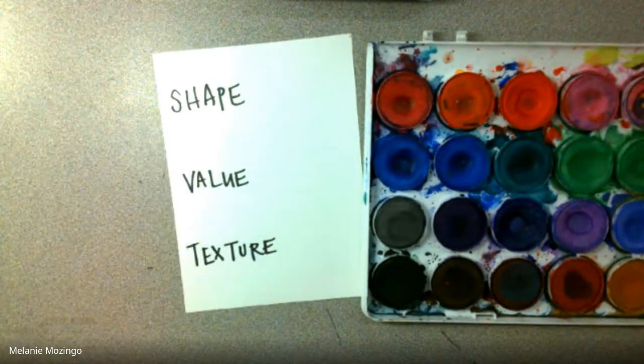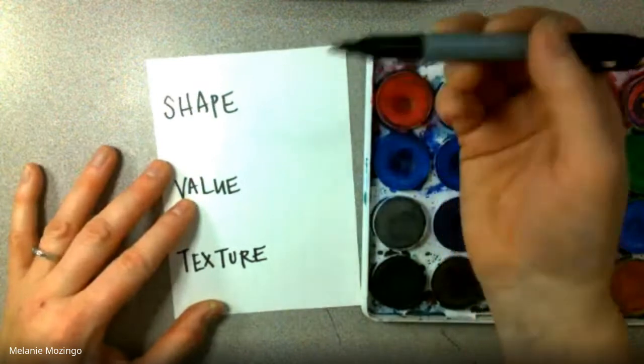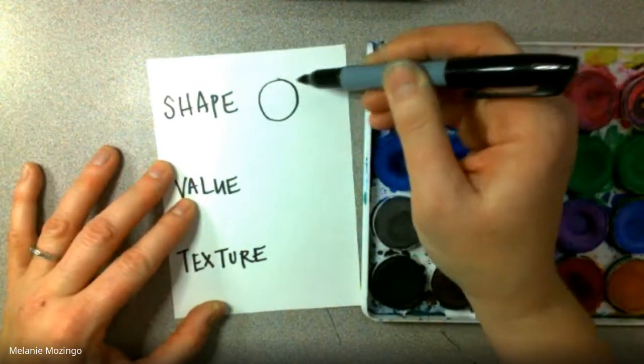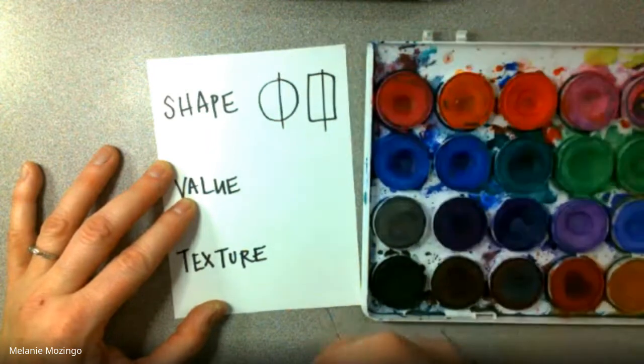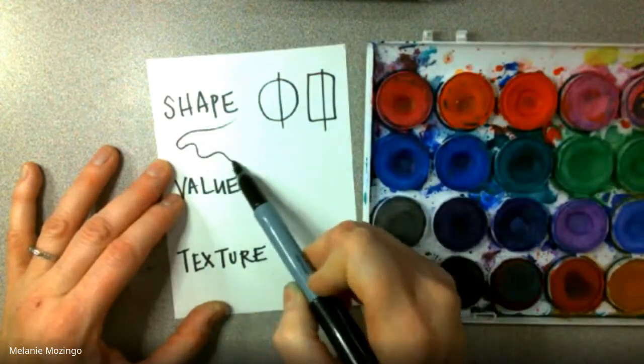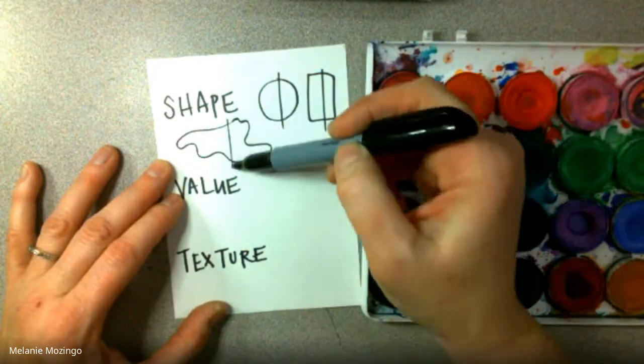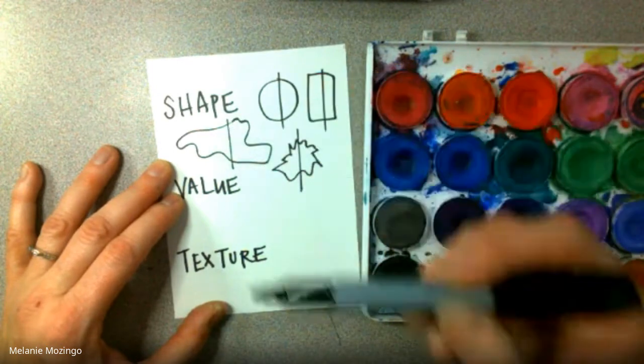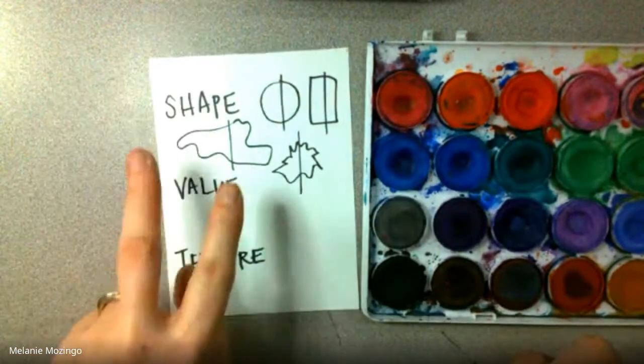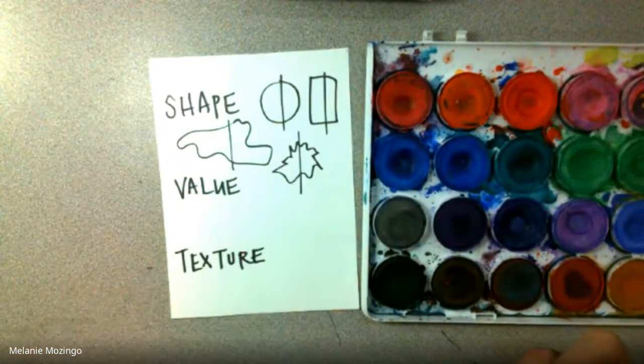We know that shape has two different families. There is the geometric family where if you divide these in half they're symmetrical, same on both sides. The other family is called the organic family. Organic is if you divide the shape in half directly in the middle, it will be asymmetrical or not the same on both sides.